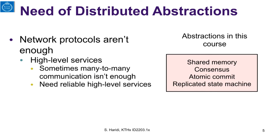There are also other types of abstractions that we need to build distributed applications, not only communication abstractions. For example, in many applications we would like to provide, over a distributed system, a distributed form of shared memory. Or we would like to have some form of agreement between different processes, or in the case of a distributed database, we would like to implement an atomic commit, which is a form of agreement. Also, maybe we would like to have a reliable service by implementing a replicated state machine — a service that is replicated over multiple machines, so that if one dies, the other machines could continue.